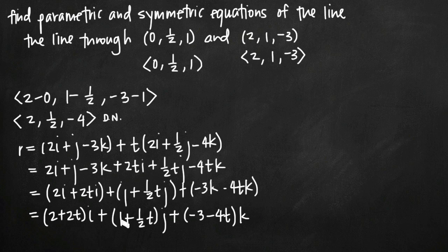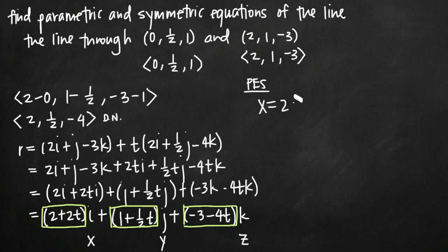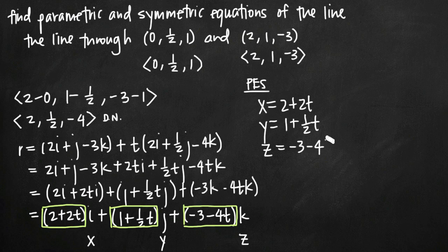The reason this is so convenient is that we now have everything needed to find the parametric equations. Since i, j, and k correspond to x, y, and z respectively, we pull the coefficients in front of each component and set them equal to the corresponding variable. Our parametric equations are: x = 2 + 2t, y = 1 + 1/2 t, and z = -3 - 4t.